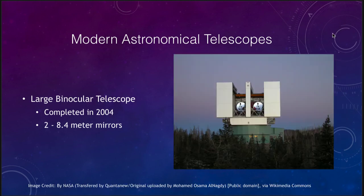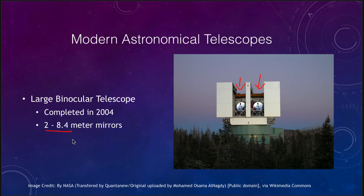The Large Binocular Telescope, completed in 2004, has two 8.4-meter mirrors and gets its name from acting almost like a pair of binoculars — two telescopes staring out into space. Working together, this gives it a much larger effective range of what it's able to observe, with mirrors even slightly larger than those of the Very Large Telescope.